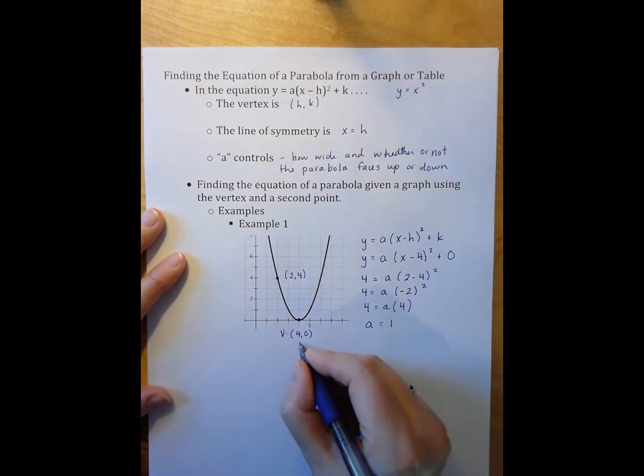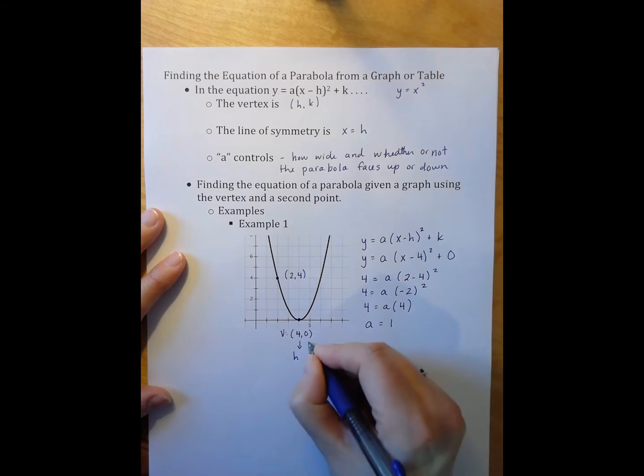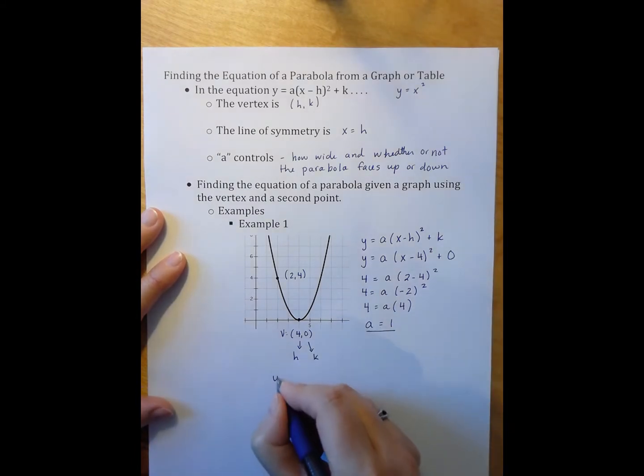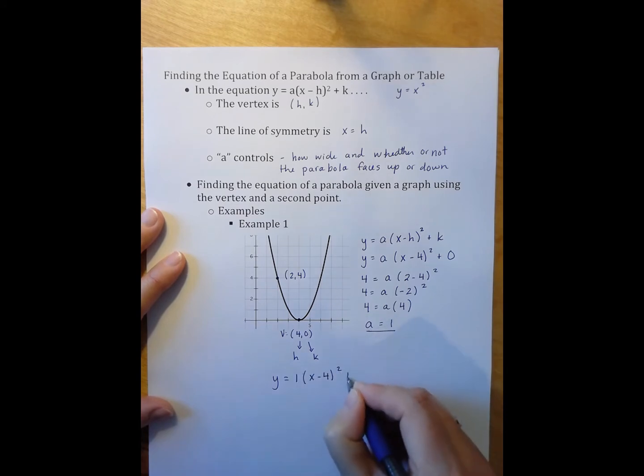So I now have my h, my k, and my a. So the equation is y equals 1 times x minus 4 quantity squared plus 0. Or, because adding 0 and multiplying by 1, I can write that a little more simply, simply x minus 4 quantity squared.